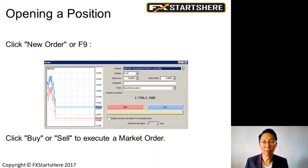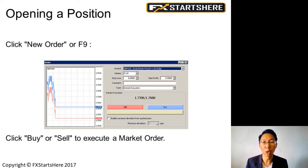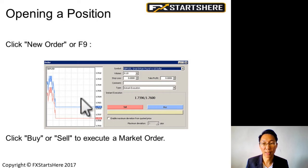So on the MT4 platform, if you have it open now, you can practice along. If you wanted to open a position, you could click on new order at the top, near the top left. Click on new order, or the shortcut key is to press F9. So when you click on new order or F9, this pop-up box appears. If you click the buy or sell, you can execute a market order.